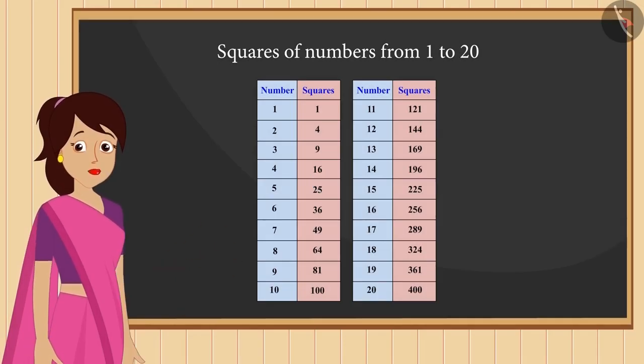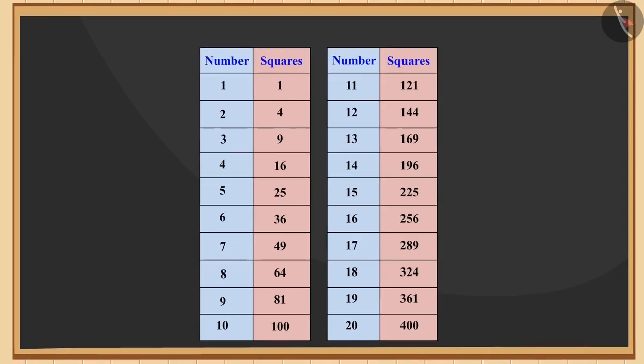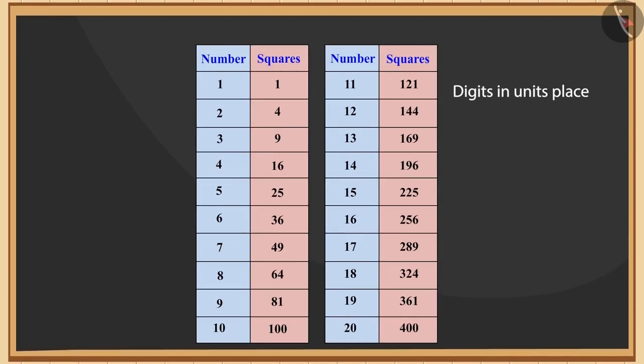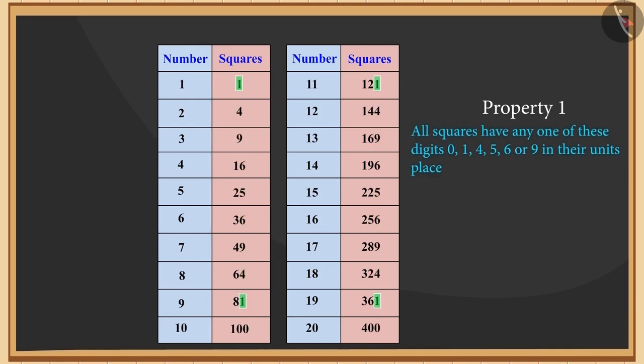After writing the squares of the numbers from 1 to 20, you must have got this type of a table of squares. Notice the digits in the units place of these squares.